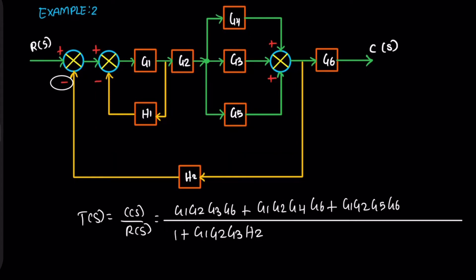Next one, the same summing point but a different path. The path gain is G1, G2, G4, then H2.